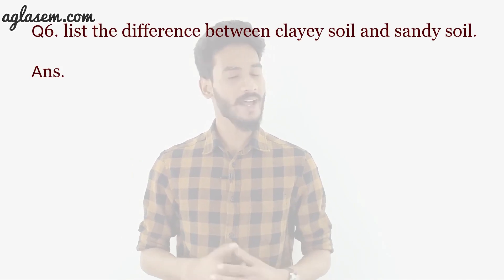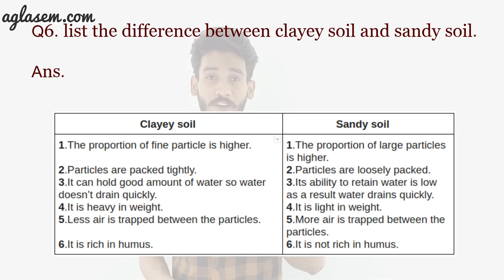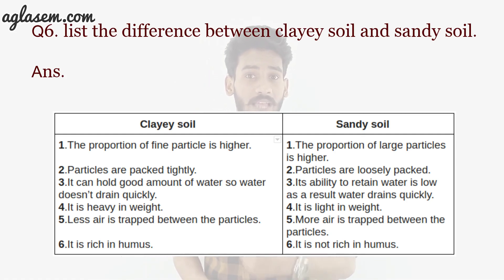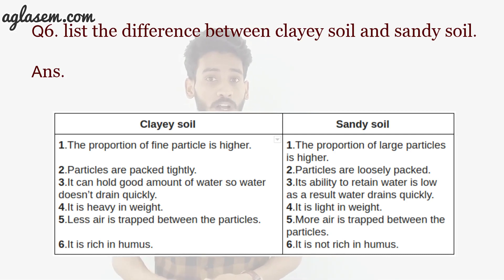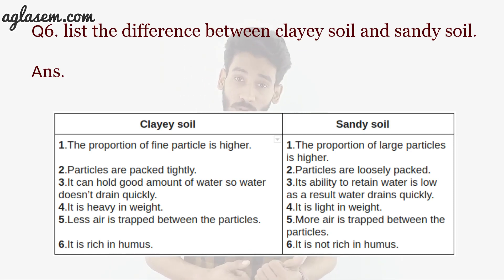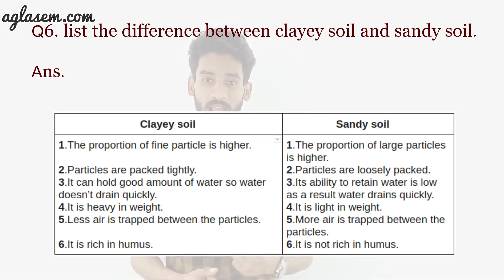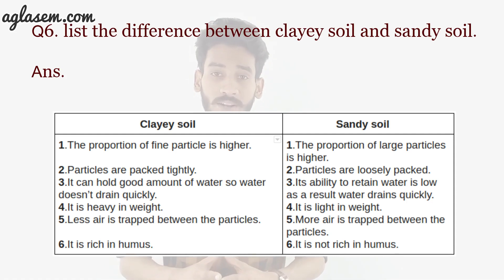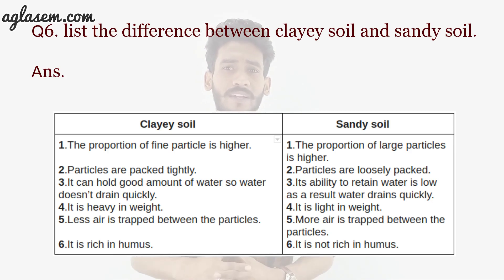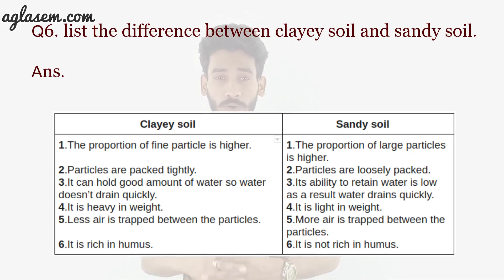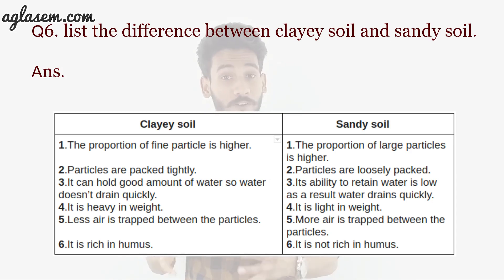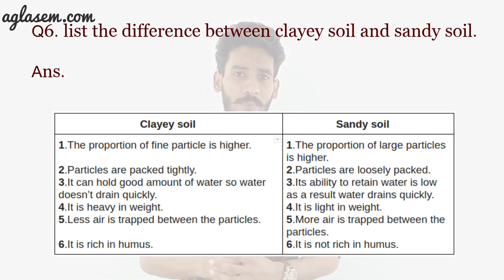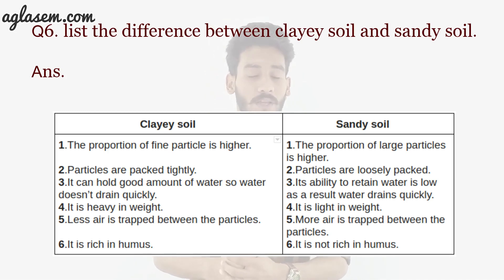Question 6: List the differences between clay soil and sandy soil. In clay soil, the proportion of fine particles is higher, whereas in sandy soil the proportion of large particles is higher. Particles are packed tightly in clay soil but loosely packed in sandy soil. Clay soil can hold a good amount of water so water doesn't drain quickly, but in sandy soil the water retention is low and water drains quickly. Clay soil is heavy in weight whereas sandy soil is light. In clay soil, less air is trapped between particles, whereas in sandy soil more air is trapped.